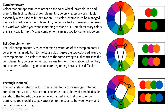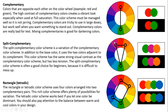Split complementary is similar to complementary except you're forming a three-color scheme. You choose a color and then choose the two colors that are adjacent to its complement. In this example on the right, the chosen color is green, and the two colors that go with it are red-orange and red-violet, because they are the colors adjacent to red. So you have a color and the two colors on either side of its complement — that's a split complementary.